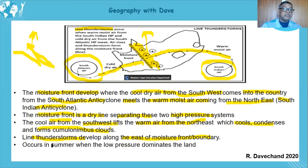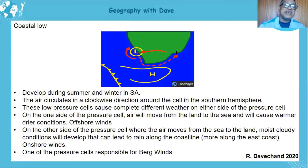Line thunderstorms occur in summer when low pressure systems dominate the land, because there must be a lower pressure for this air to move towards. Again, you can see the influence of the South Atlantic high and South Indian high over South Africa's weather.